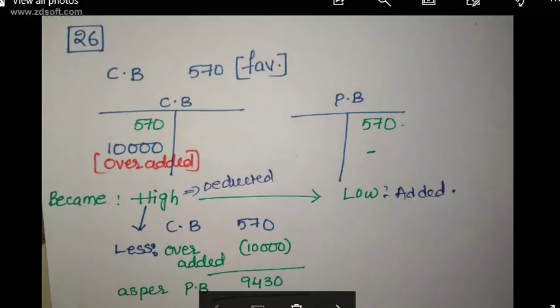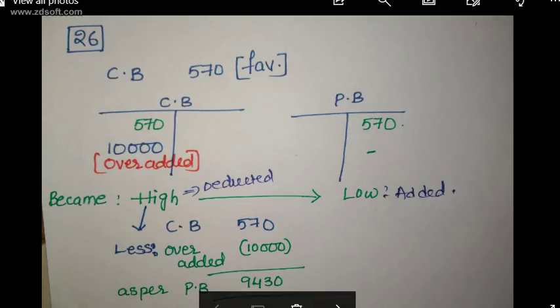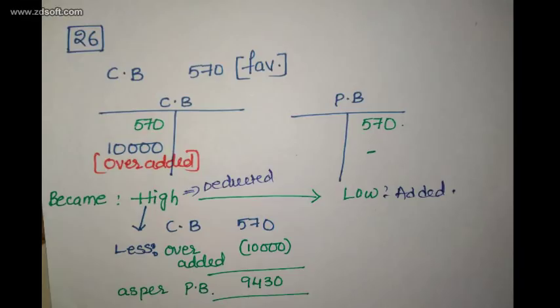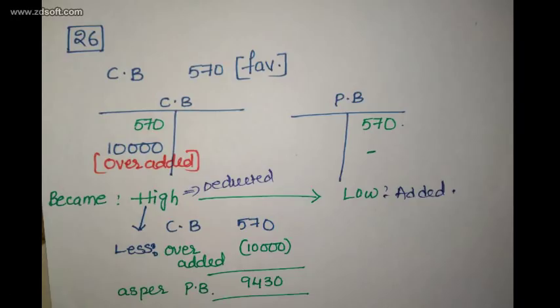Over-adding ₹10,000 to the debit side of cash book means it is not reflected in the passbook, so cash book became high and passbook became low. The rule: when there is a favorable balance, cash book is the starting point. When cash book is showing higher and passbook showing lower, we need to deduct as per the rule. So ₹10,000 over-added is deducted from cash book balance, giving passbook balance of ₹9,430. Option C, ₹9,430, is correct.